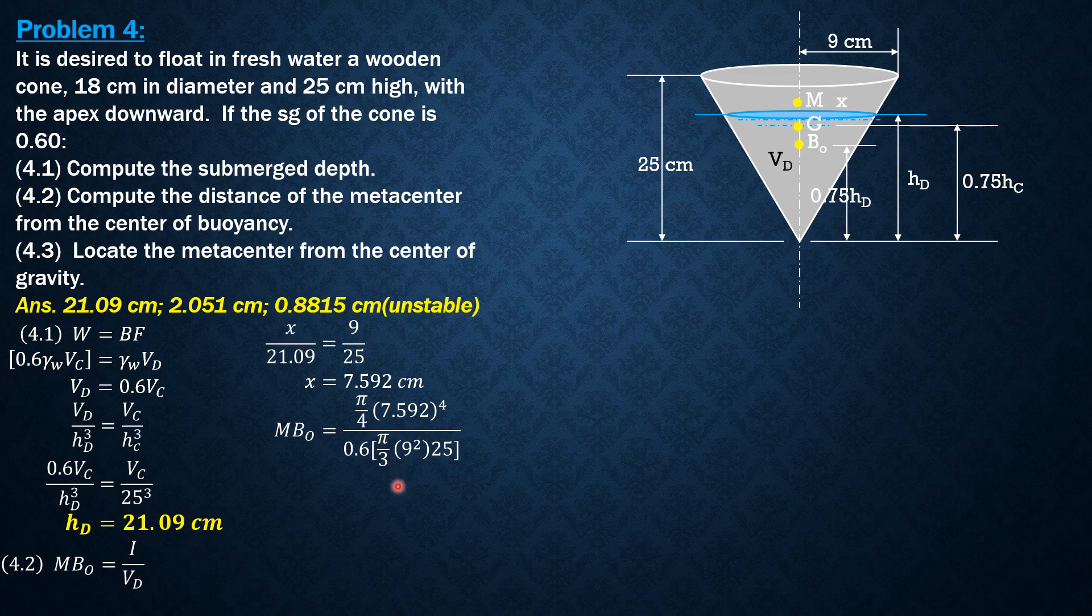Cancel out pi, so three-fourths of 7.592 to the fourth over quantity 0.6 times 9 squared times 25 gives us the distance of the metacenter from center of buoyancy: 2.051 cm.